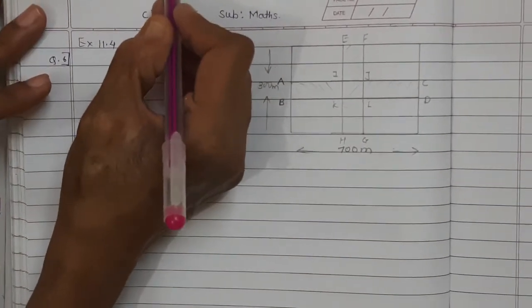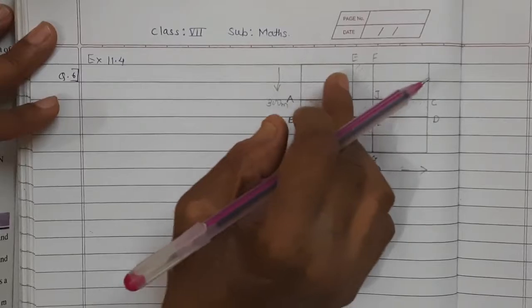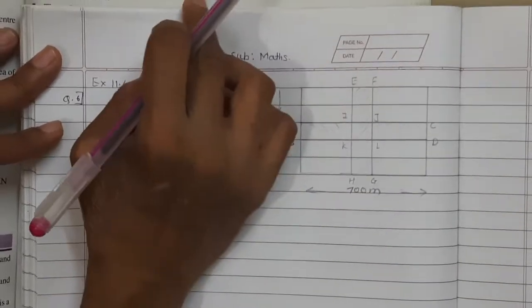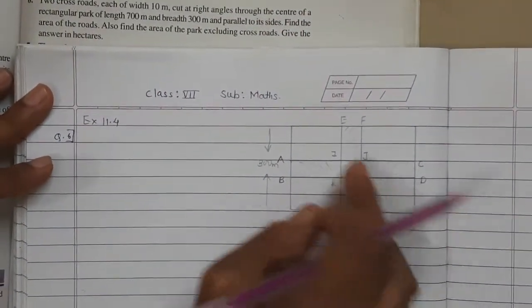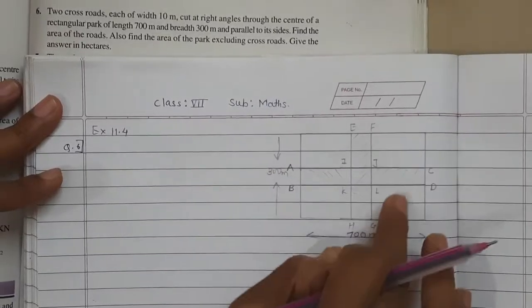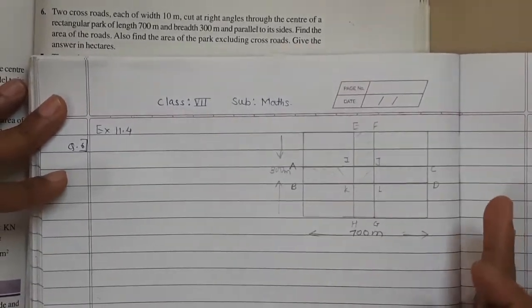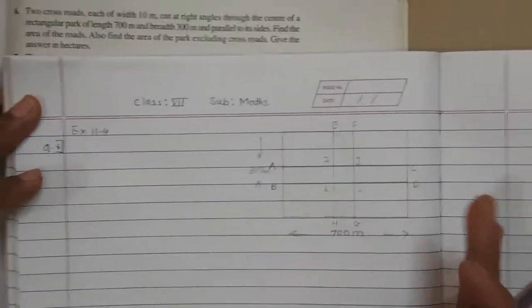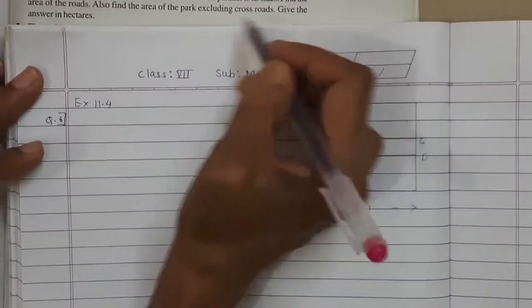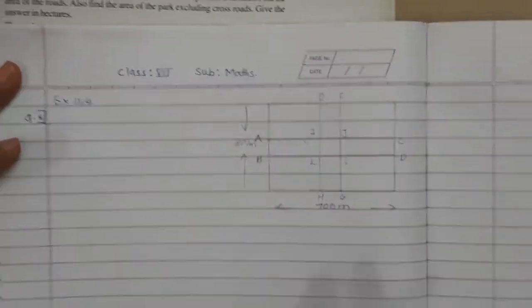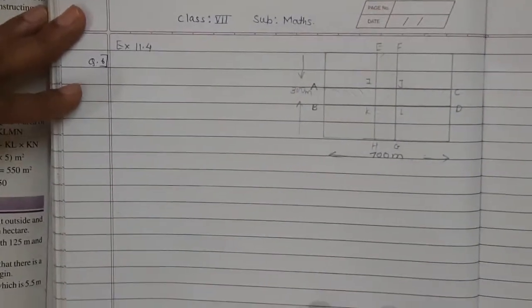Also find the area of the park excluding cross road. Area of the road — area of the park means this much part, excluding cross road means we do not have to include the cross roads in that. Give the answer in hectares.